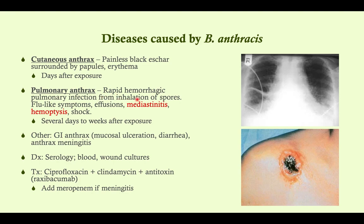Pulmonary anthrax is the one that we're really afraid of when we talk about bioterrorism. It causes a rapid hemorrhagic pulmonary infection — very fulminant — so once you start getting symptoms you're really in trouble. This is from inhalation of spores; they go to the mediastinum, to the hilar lymph nodes, and they germinate there, then spread hematogenously and locally. They cause flu-like symptoms, and ultimately you get effusions and this widened mediastinum. It will kill off the lung parenchyma causing hemoptysis, and then as it gets into the bloodstream it causes shock via the release of inflammatory mediators — interleukin-1 and TNF.